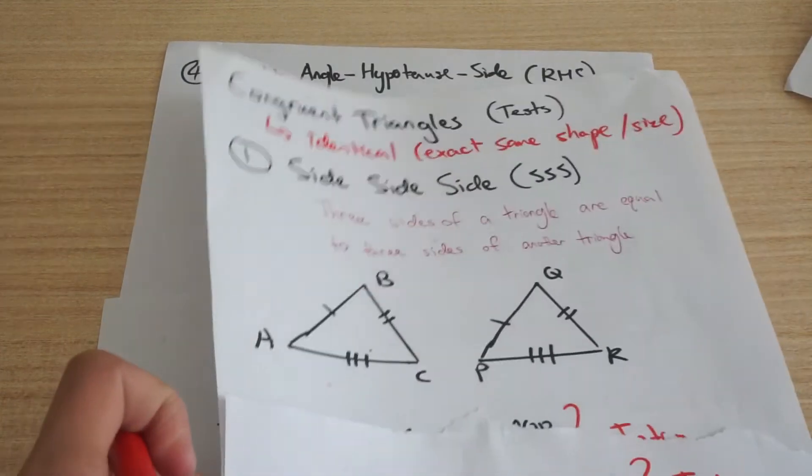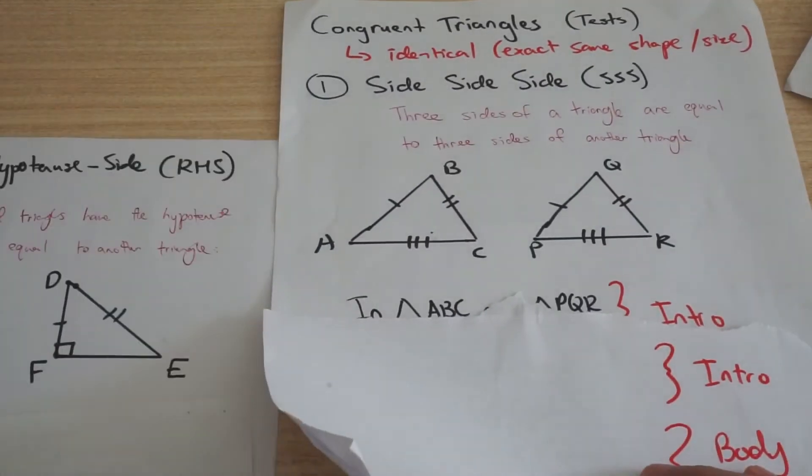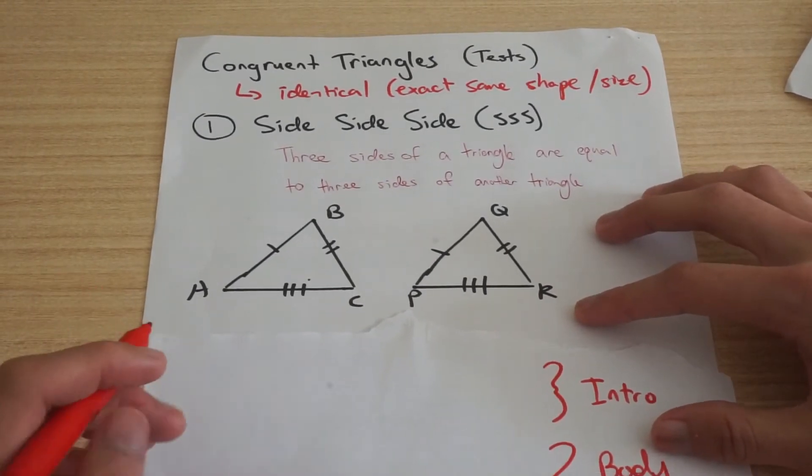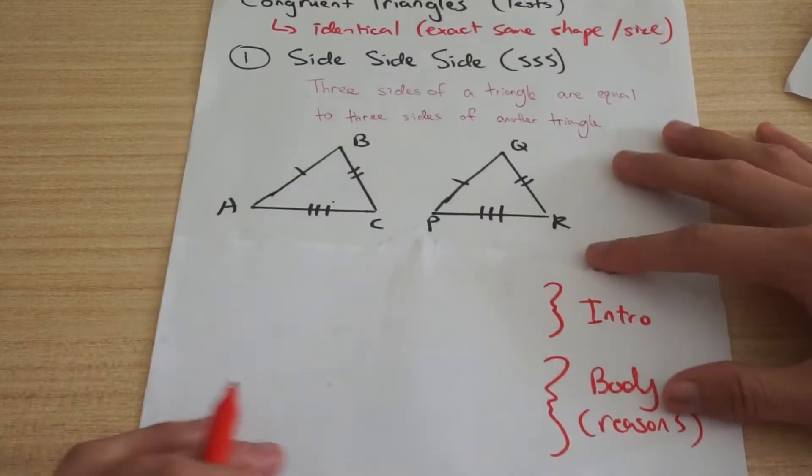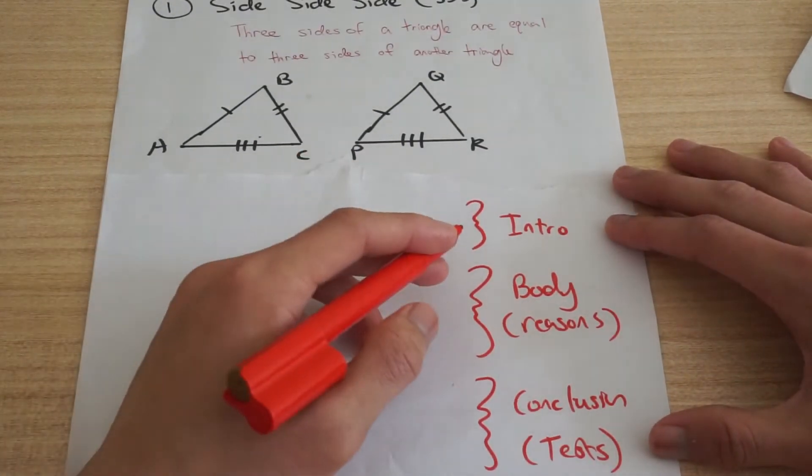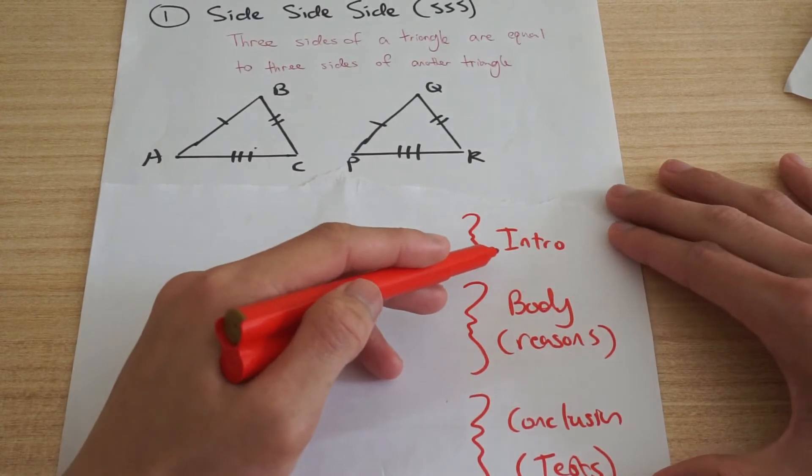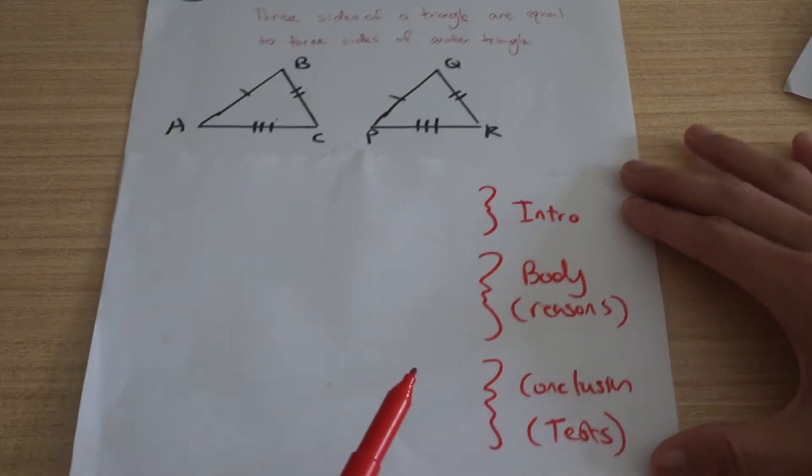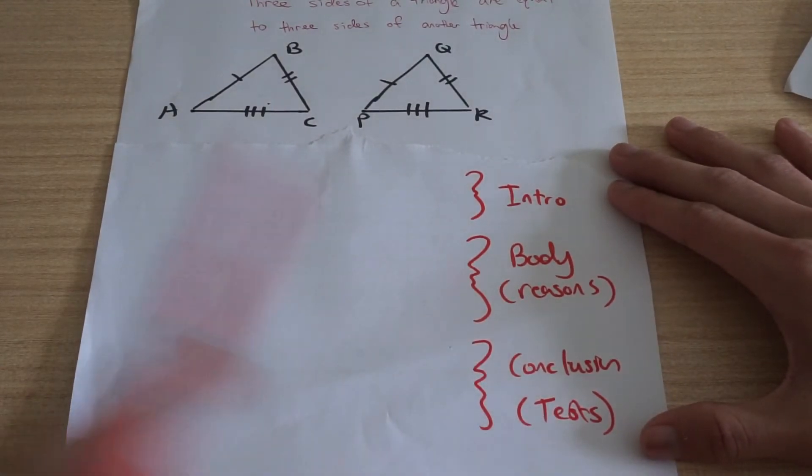Okay, so how do we actually do the formal proof? And this is one of the cases where Math and English are good friends. We want to use a similar structure as like a mini essay. So if you have an intro, you've got a body, that's where you're going to give your reasons and you've got a conclusion to summarize it up and that's where you put your tests.